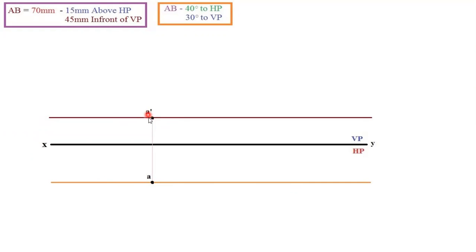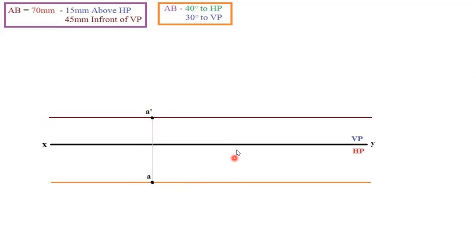Keep a point and name it as A dash. A dash and A should be lying on the same vertical line. You can use your scale and keep another point, or you can draw a thin line with your two-edged pencil. Whatever view we get above the XY line will be the front view, and below will be the top view. For a front view, we put a dash; for top view, we don't put a dash. So on the same vertical line, mark another point which is 45mm below the XY line — that is 45mm in front of VP — and name it as A.